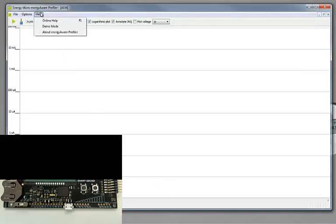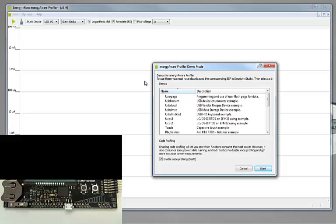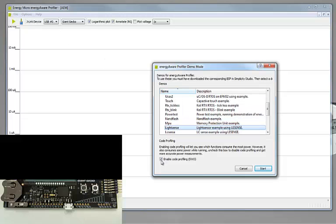Now we will see a live demonstration of LeSense sensing a resistive type of sensor. We will open the LightSense demo in the Energiaware profiler.